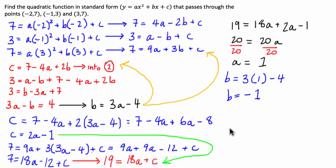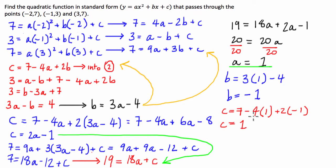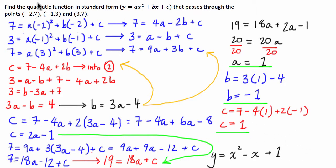Now we have an equation for c: c = 7 - 4a + 2b. Substituting a = 1 and b = -1: c = 7 - 4(1) + 2(-1) = 7 - 4 - 2 = 1. So we have a = 1, b = -1, and c = 1. Putting that into standard form, our quadratic equation is y = x² - x + 1, and this passes through the points (-2, 7), (-1, 3), and (3, 7).